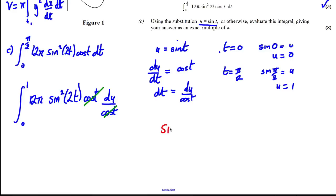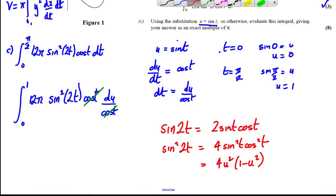However, you've got an issue with the sin²(2t). Now sin(2t) is 2sin(t)cos(t), so sin²(2t) is all of this squared, which is 4sin²(t)cos²(t). That's 4 times u² times (1 - u²). So we need to substitute that in here instead of this.